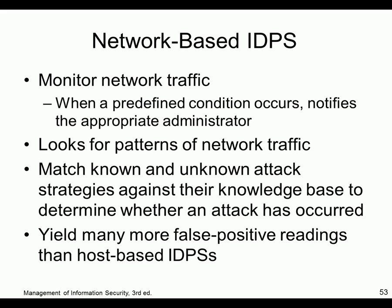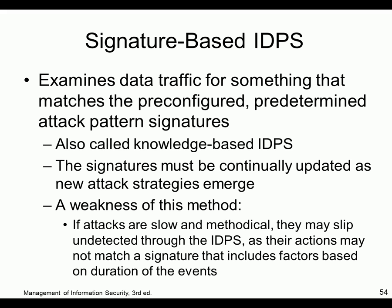Network-based IDS listens in on traffic, notifies administrators, and looks for patterns. They match known and unknown attack strategies based on signatures and usage patterns, but have more false positives than host-based systems. Signature-based IDS looks for specific traffic signatures. Weakness: if the signature is new, it won't detect it. If attacks are slow and methodical they can slip through undetected. A good example is VPN traffic — VPN could let viruses get in because they bypass the firewall through encrypted data.